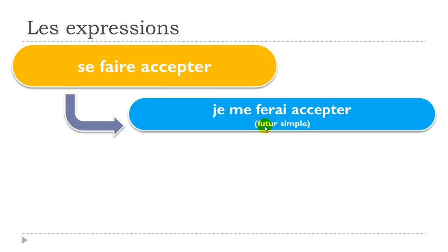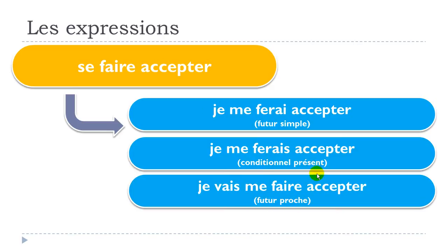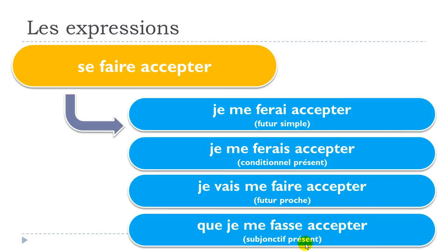Let's conjugate this expression in different tenses. Le futur simple: je me ferai accepter. Le conditionnel présent: je me ferais accepter — phonetically similar but written with an 's'. Le futur proche: je vais me faire accepter. Le subjonctif présent: que je me fasse accepter.